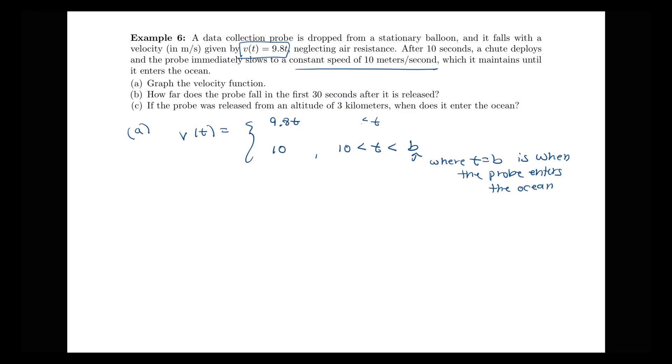And for the first 10 seconds here, we have this velocity of 9.8t. So we have a linear velocity here for the first 10 seconds. At 10 seconds, I've got this velocity of 98 meters per second. Then at 10 seconds, it drops to the speed of just 10 meters per second. So we have this function that we're working with here.